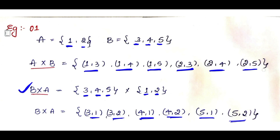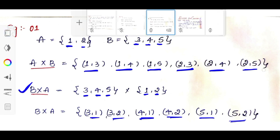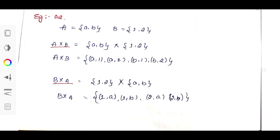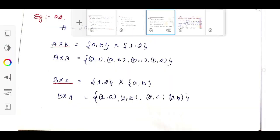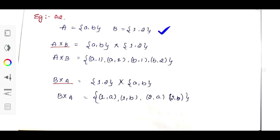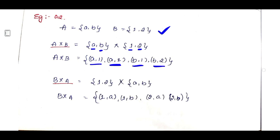Let's understand with one more example. Consider set A as {a, b} and set B as {1, 2}. To calculate A cross B, take element a and pair with all elements of set B: ordered pair (a,1), ordered pair (a,2). Then take element b and pair with all elements of set B: ordered pair (b,1), ordered pair (b,2). This is a set of all ordered pairs from A and B, where the first element is from set A and the second element is from set B.